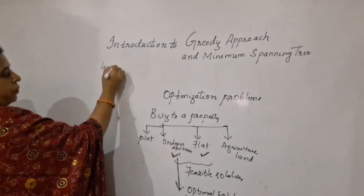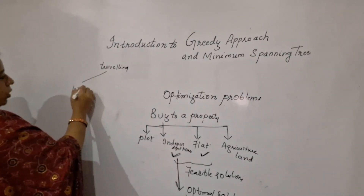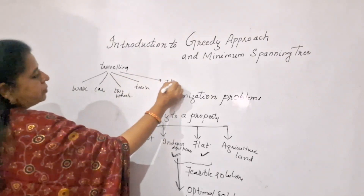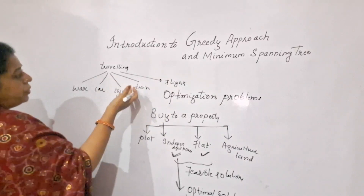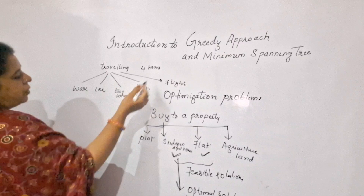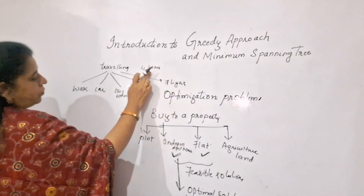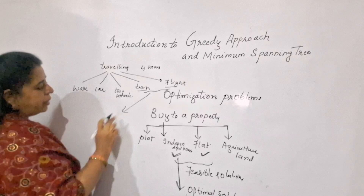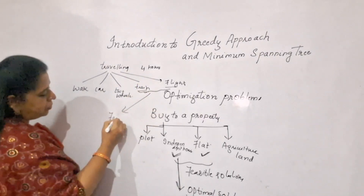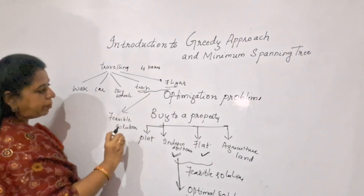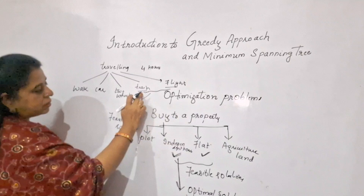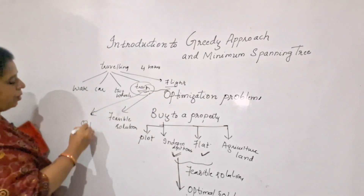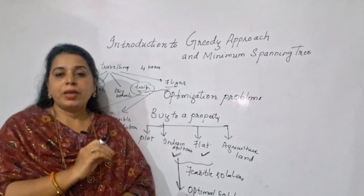Here is one more example. When traveling, you have different means of transportation: walking, a four-wheeler, a two-wheeler, a train, or a flight. If the constraint is that you must reach within four hours, you check which modes can get you there in less than four hours. Train and flight qualify — these are the feasible solutions. If there is a further condition to spend minimum cost, the train is cheaper than the flight, so you select the train. This is the optimal solution.